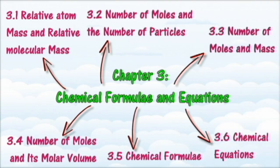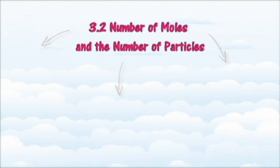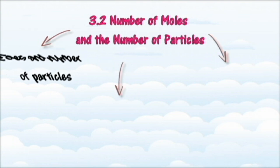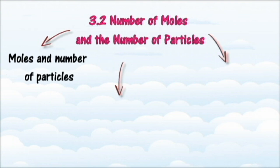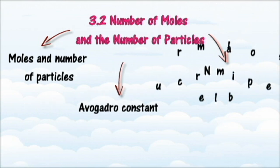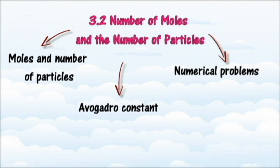In Section 3.2, we will learn about the relationship between the number of moles with the number of particles. At the end of this section, you should be able to define a mole as the amount of matter that contains as many particles as the number of atoms in 12g of Carbon-12, state the meaning of the Avogadro Constant, relate the number of particles in one mole of a substance to the Avogadro Constant, and solve numerical problems to convert the number of moles to the number of particles of a given substance, and vice versa.